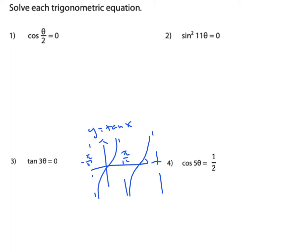If you do want to find a general solution — for example, you might have y equals to one half — that gives you one solution, and you'll have multiple solutions if you add simply another period. So if this solution is alpha, we say x equals nπ, meaning you can add any period, plus alpha, which is one principal value. This is called the principal value, where n is an integer.